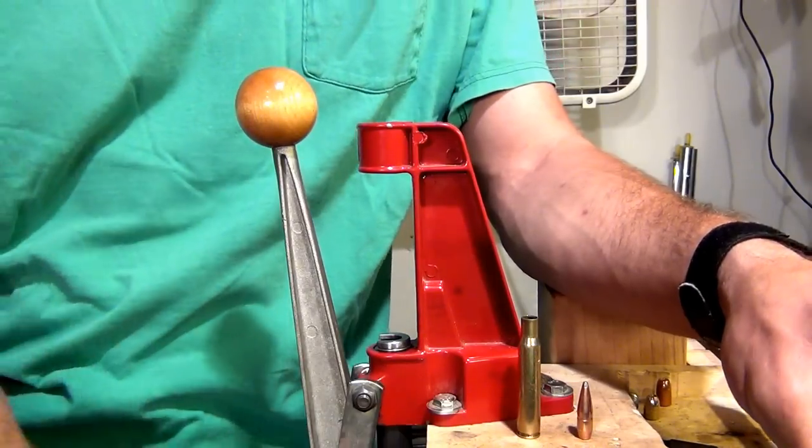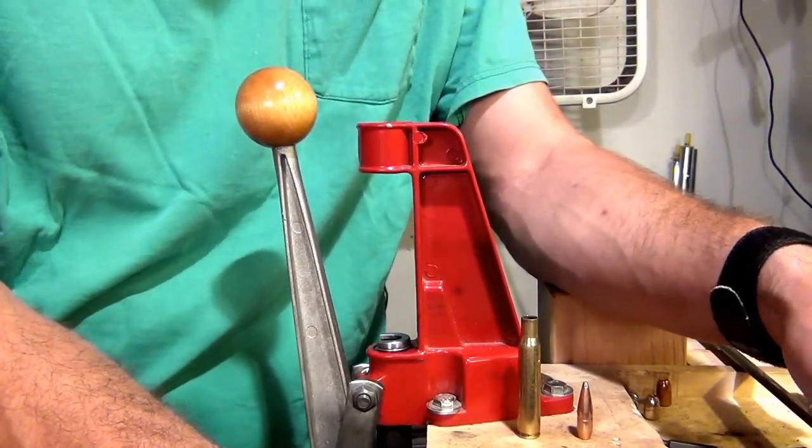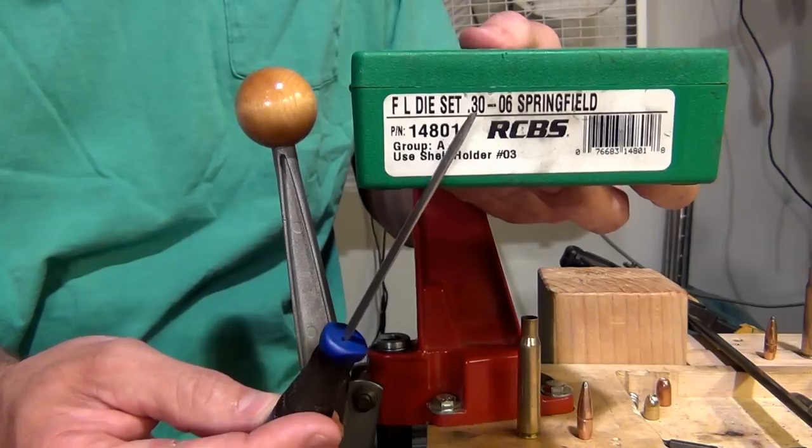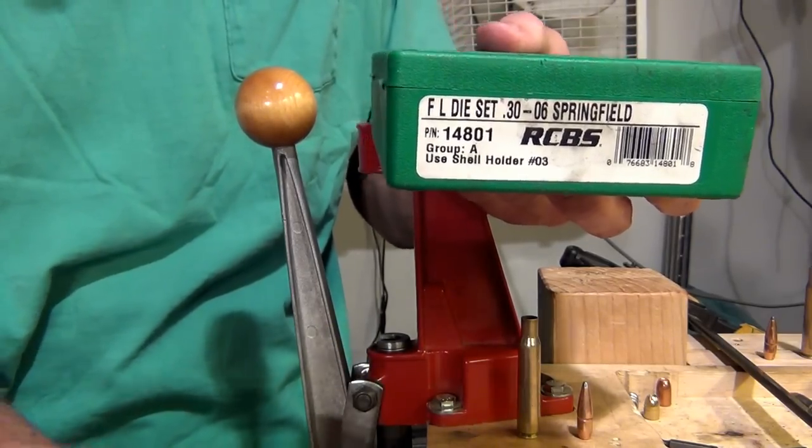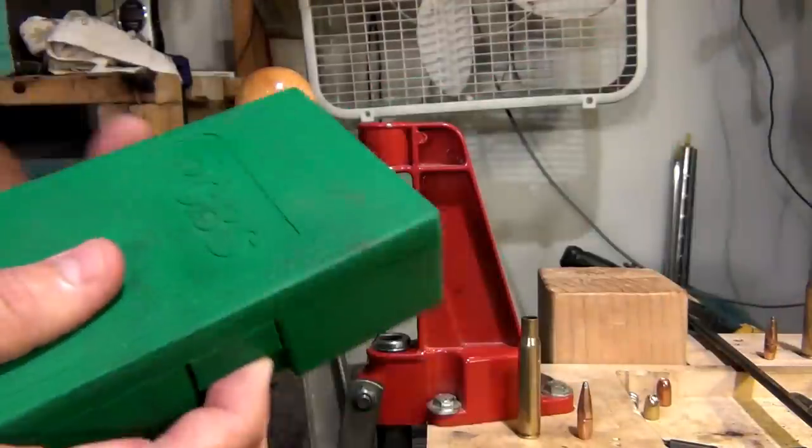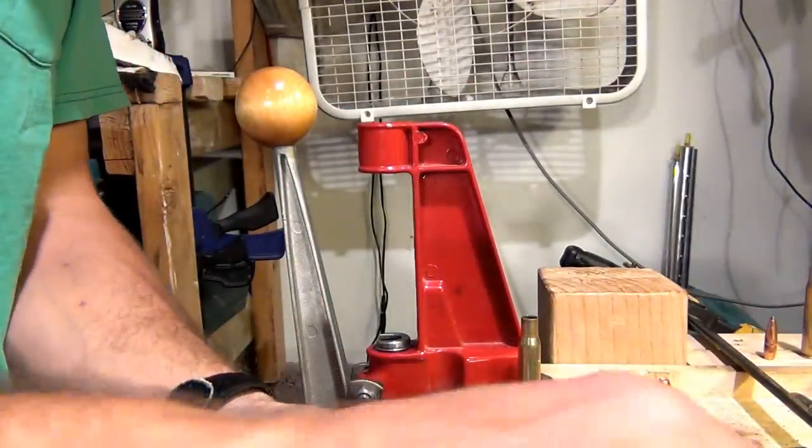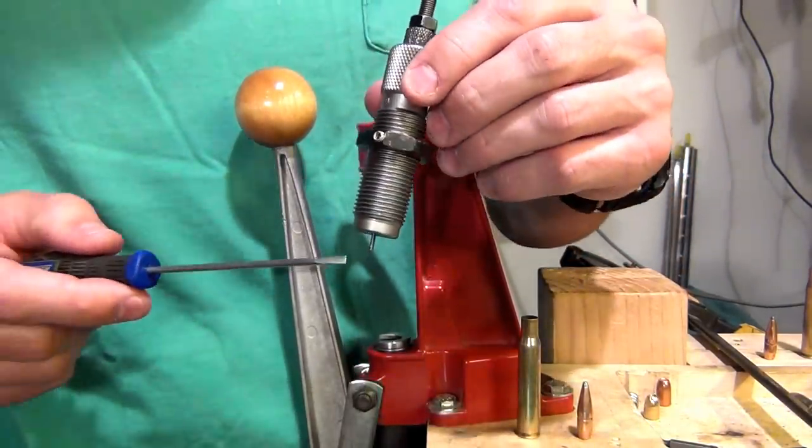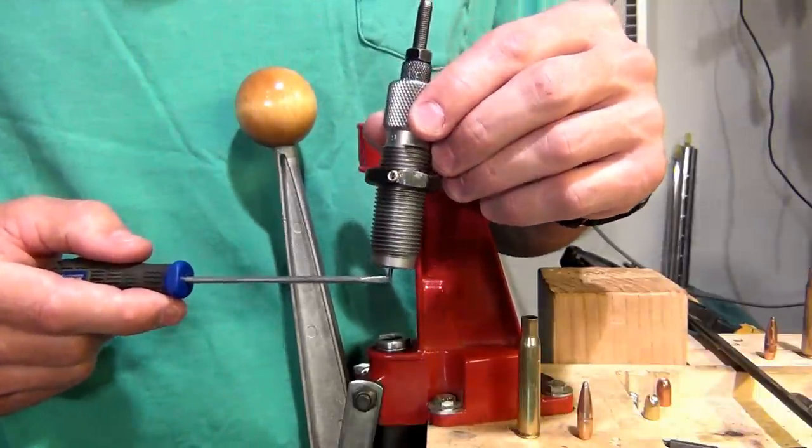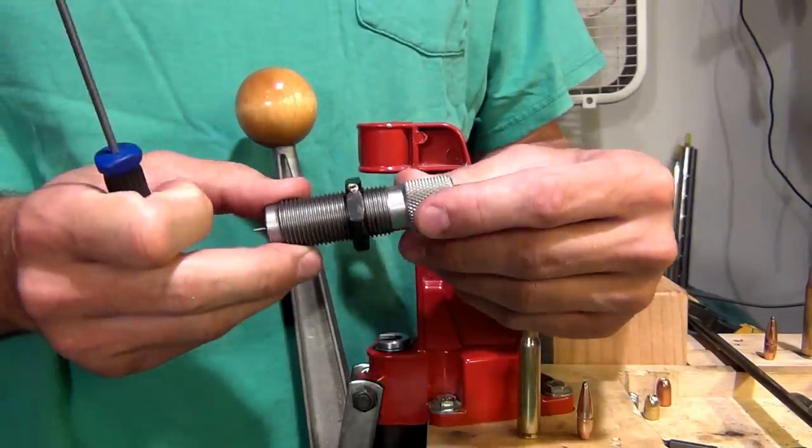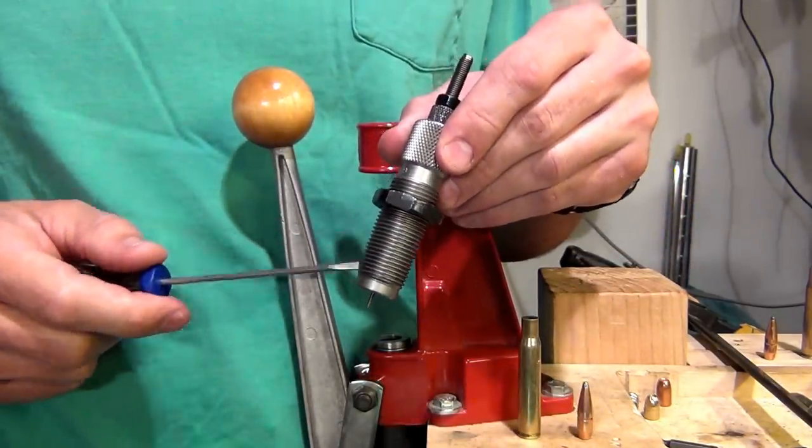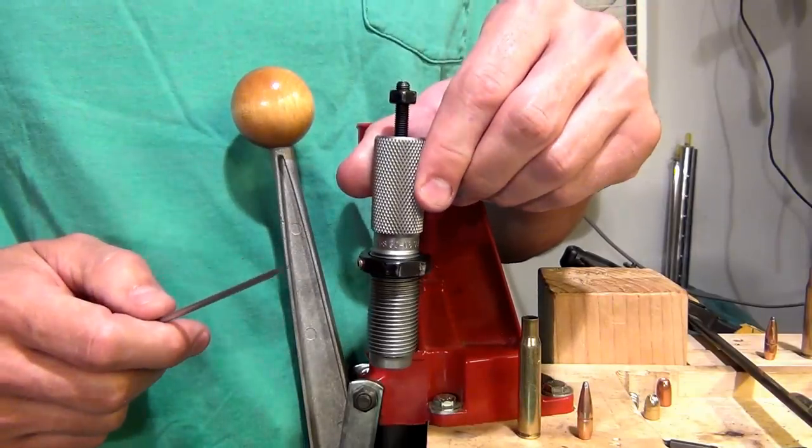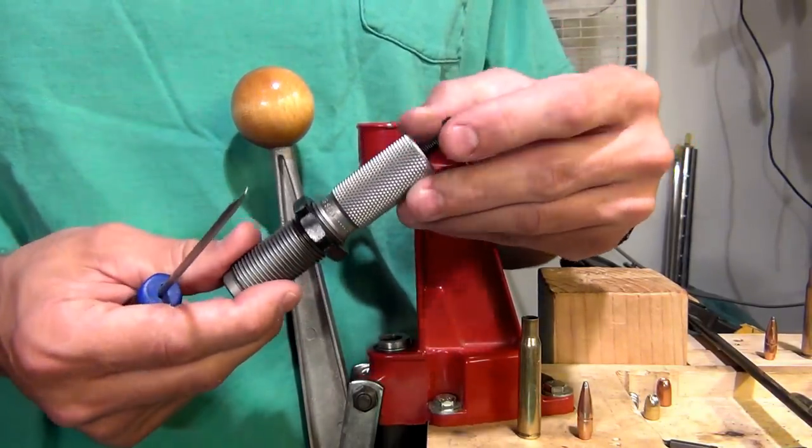My recommendation is get the two die set because the second die will do two operations for you. If you had a progressive press, then I'd highly recommend the three die set for rifle. But in our case, we're going to be using a full length die set by RCBS to do the .30-06. This set will come with two dies. It will come with your decapping die, which is noted by the decapping pin. This die will do two operations. It will full length resize the case and it will knock out the old primer. The second die in the set is the bullet seating die, which can also be used to crimp the bullet.